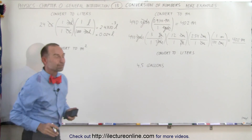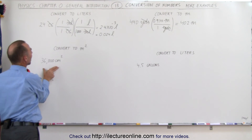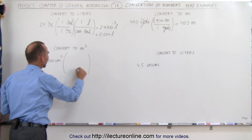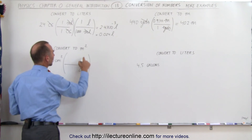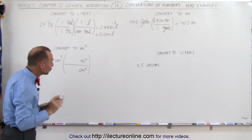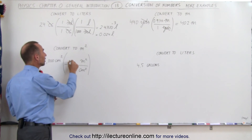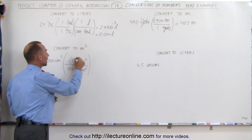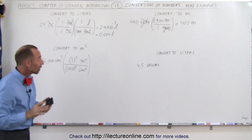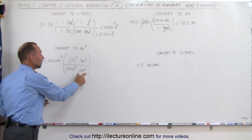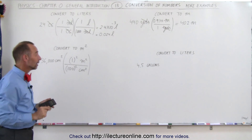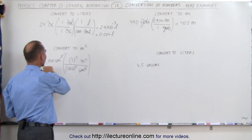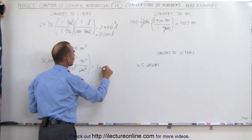Now we have 36,000 square centimeters — and this is where students make mistakes. When converting to square meters, we need centimeters squared at the bottom and meters squared at the top. The conversion from centimeters to meters is one meter equals 100 centimeters, but since it's meters squared and centimeters squared, we have to square the conversion factor. So instead of dividing by 100 we divide by 10,000. Centimeters squared cancels out, and 36,000 divided by 10,000 gives exactly 36 square meters.